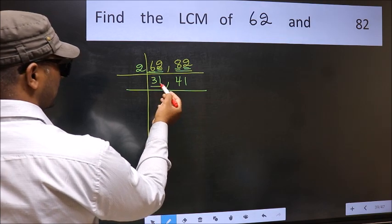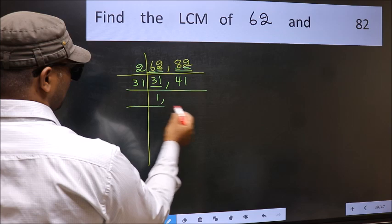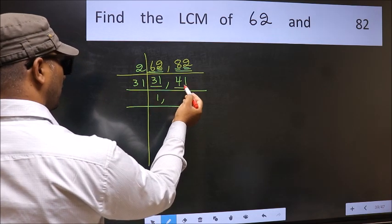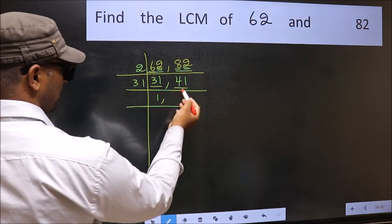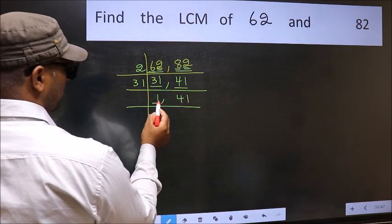Now we have 31. 31 is a prime number, so 31 goes into 31 once. The other number is 41, not divisible by 31, so you write it down as it is. Now we got 1 here.